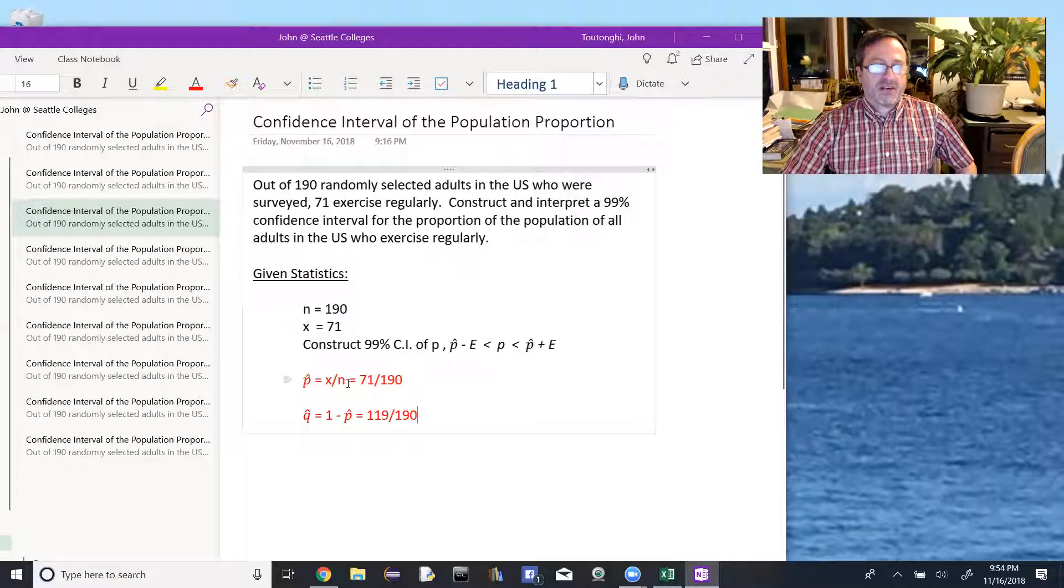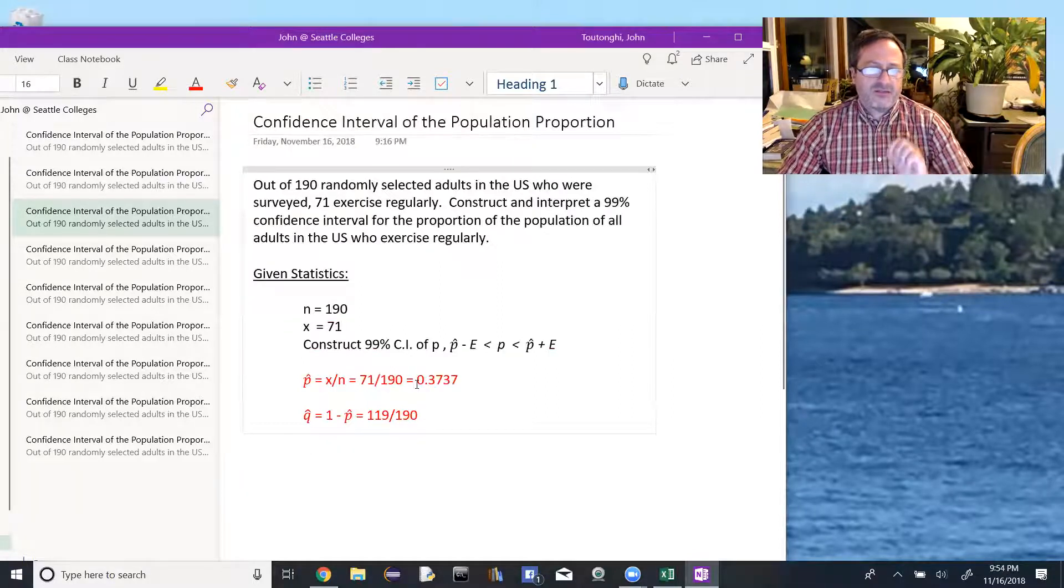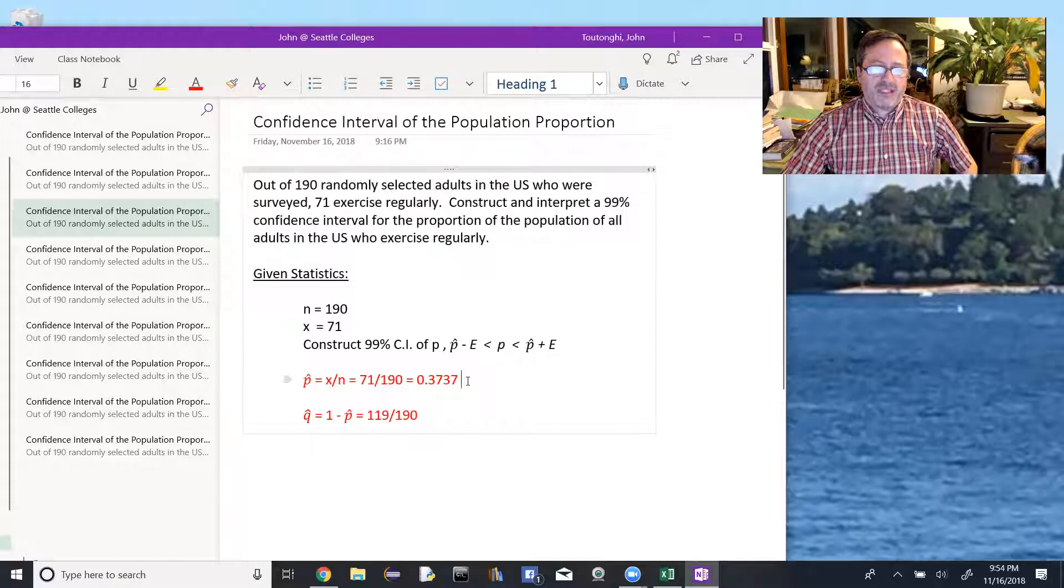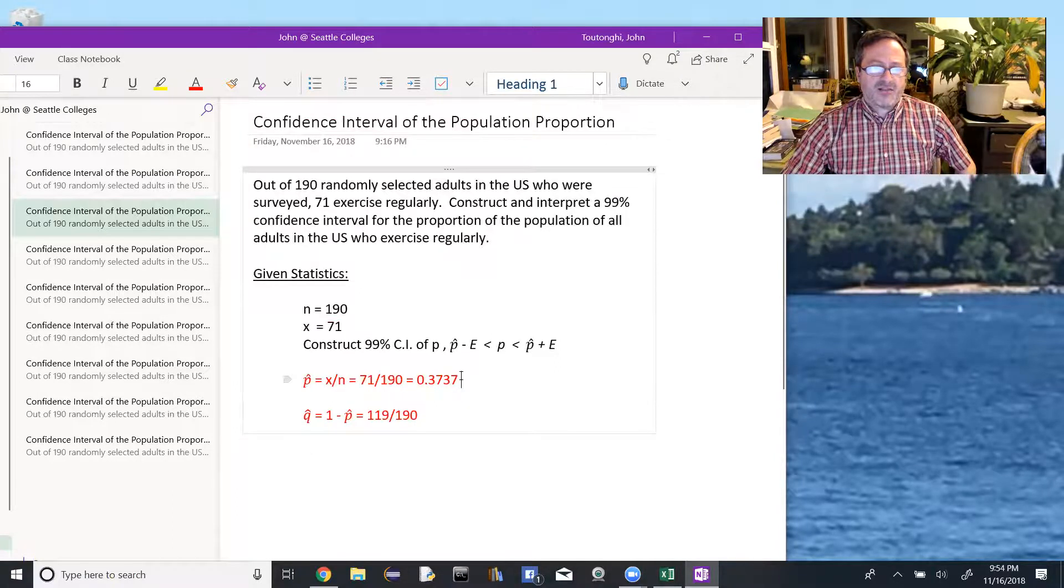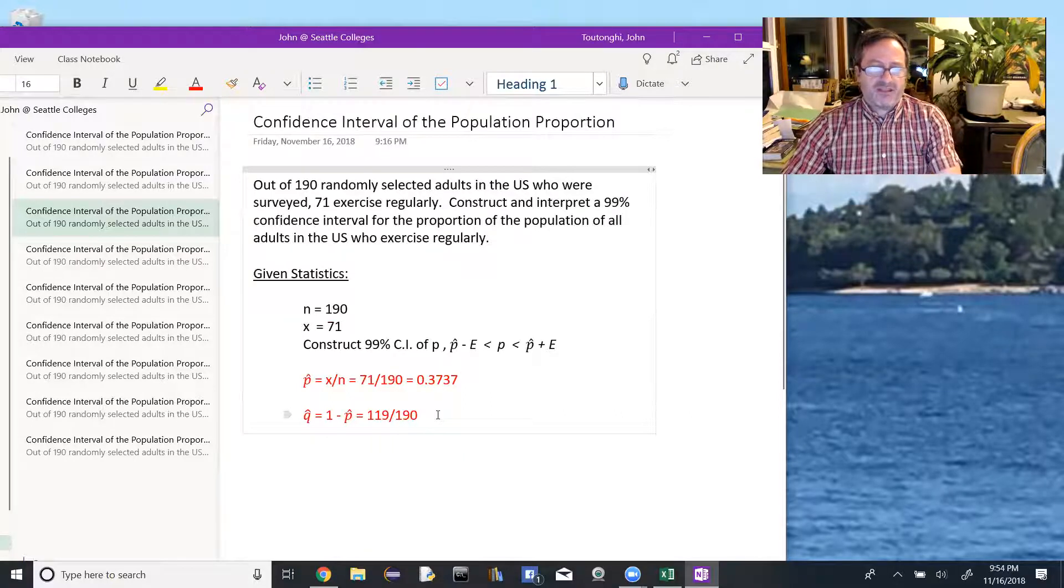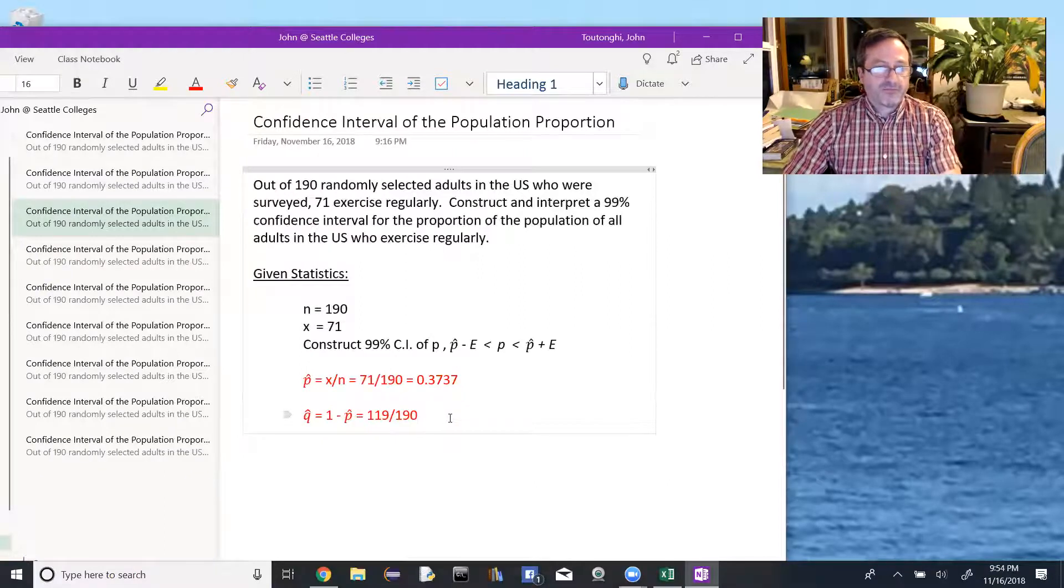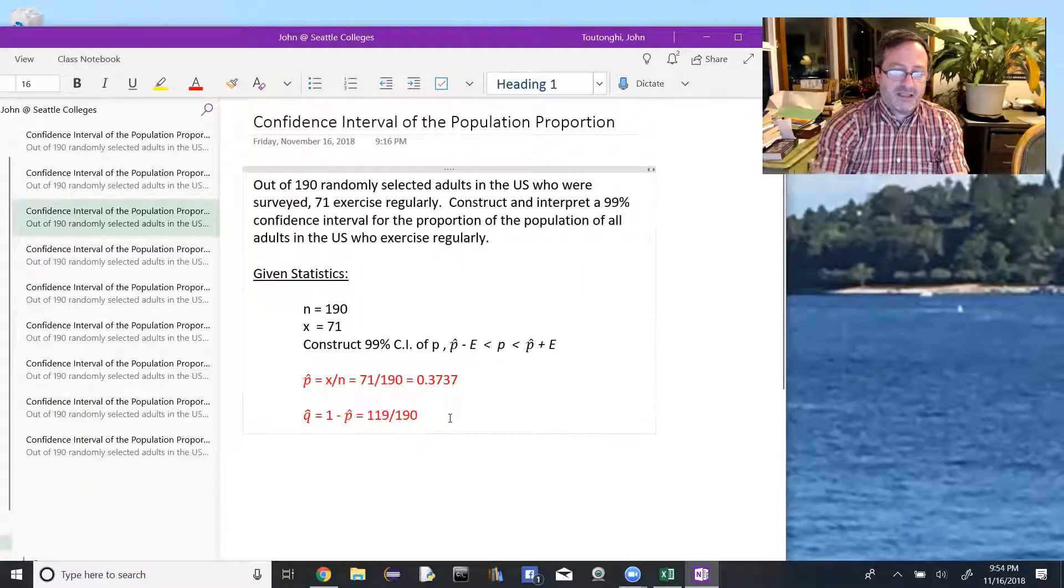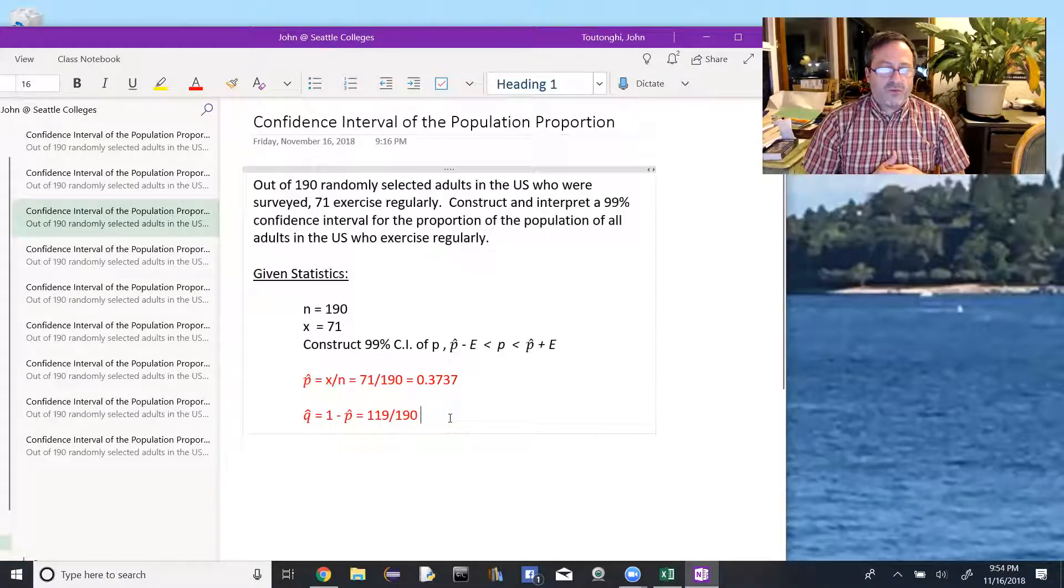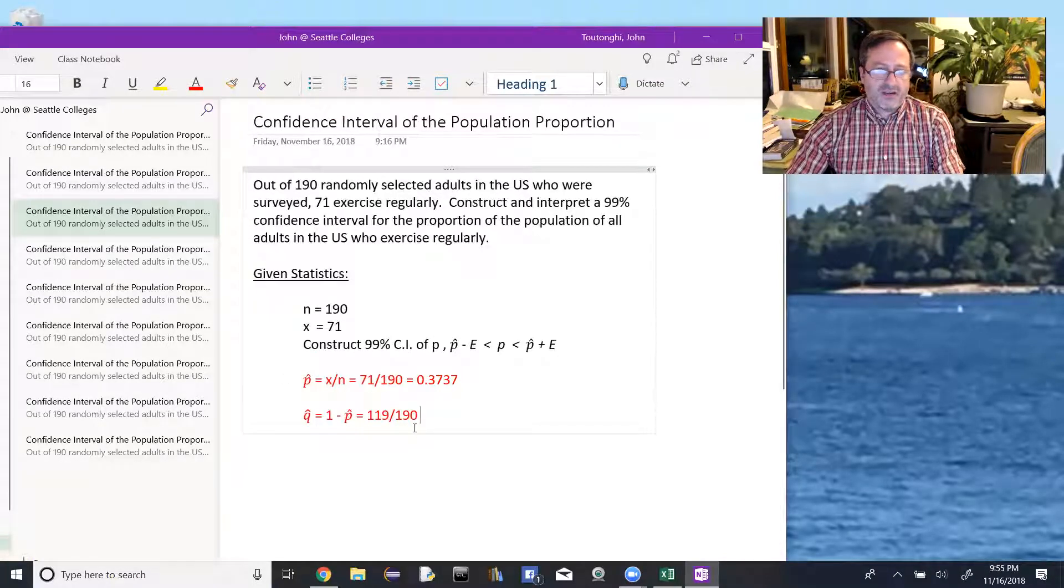p-hat is given by x over n, that's 71 over 190. I could figure out what that is. Usually, I'd want to keep the 71 over 190 as a fraction in my computations, because I don't want to round anything until the very end. And then q-hat is 1 minus p-hat. 71 plus 119 equals 190, so if I add these two fractions together, I get 1.